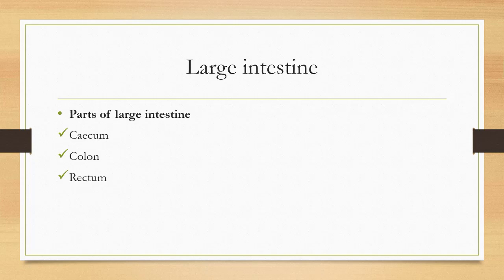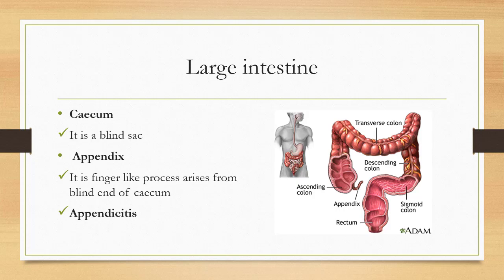Now we will start our second objective: the large intestine. The parts of the large intestine are the cecum, colon, and rectum. First, the cecum — it is a blind sac that projects from the large intestine between the ileum and colon. The finger-like process arising from the blind end of the cecum is called the appendix. Sometimes food entraps in the appendix, and its decay causes inflammation called appendicitis.